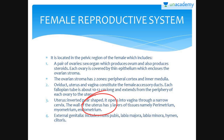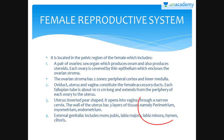External genitalia includes mons pubis, which is a cushion of fatty tissue covered by skin and pubic hair. Then there is labia majora, which has fleshy folds of tissues extending down from the mons pubis and surrounding the vaginal opening. Then there is labia minora, which is a pair of folds of tissues under the labia majora.